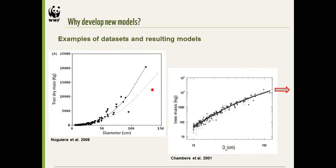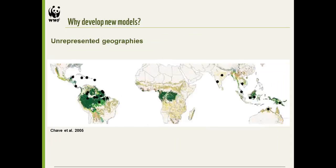These are two examples of how large trees can change the shape of the resulting model. In a small dataset with one tree at 100 centimeters diameter, you get an exponential relationship, whereas if that tree had weighed less you'd get a different relationship. The Chambers equations had only one tree greater than 100 centimeters, so predictions leveled off at that point. This shows how the lack of big trees can really determine the allometric relationship you find.